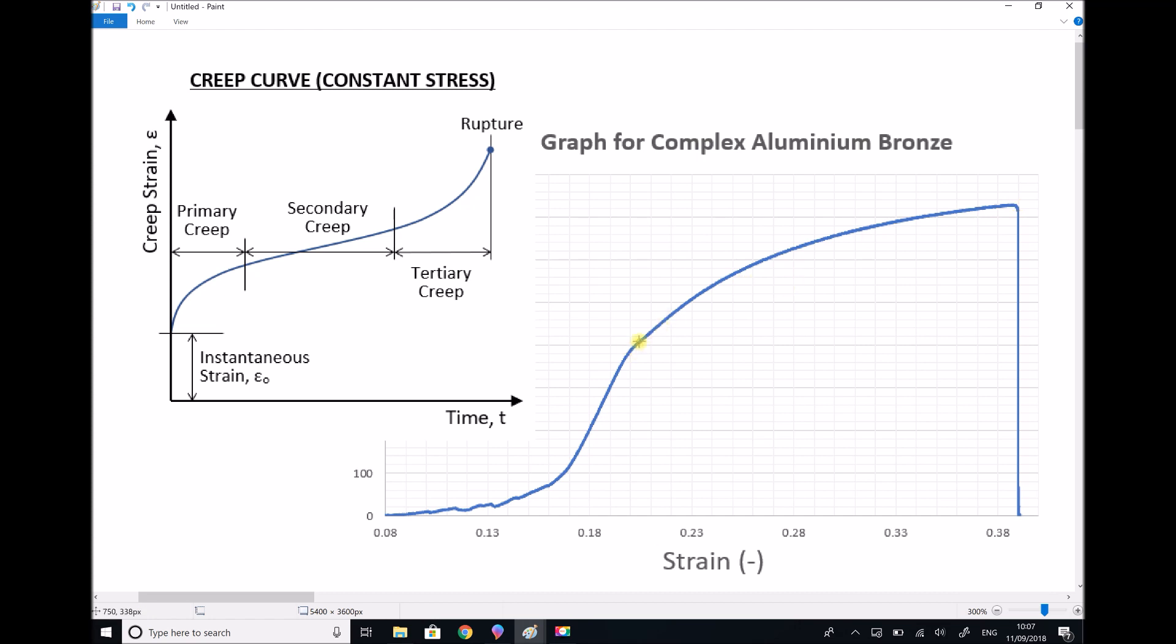So the material yields here and begins to plastically deform, but it fails here at the ultimate tensile stress level. Now here we have nice predictable results when we have gradual loading. So what we're doing is we're increasing the load on the test piece. As the load increases, we get elastic deformation. As the load increases further, we get plastic deformation. And once the load reaches the critical point, the material fails.